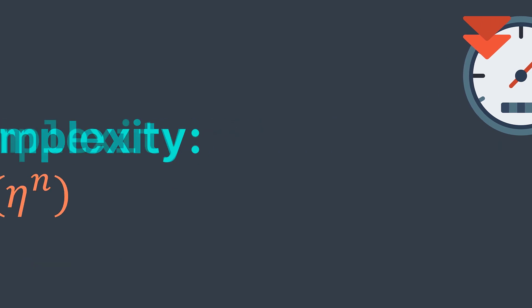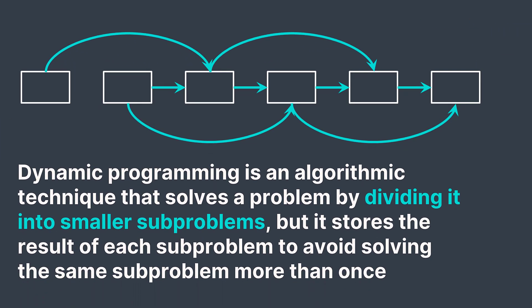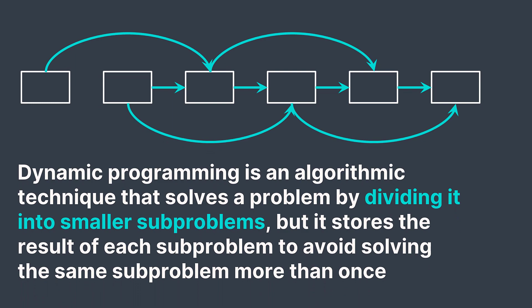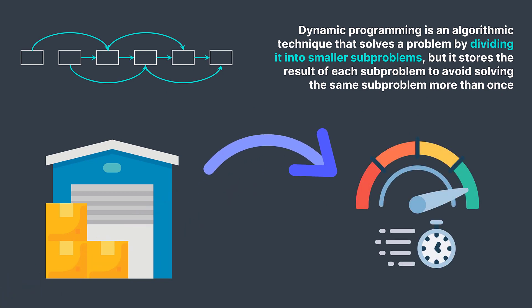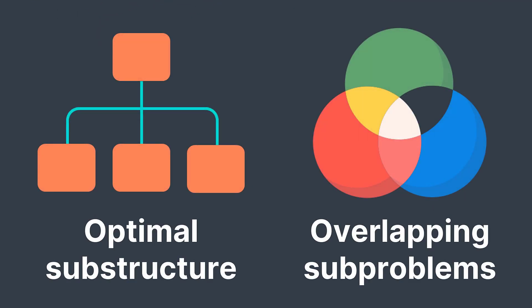Dynamic programming is an algorithmic technique that solves a problem by dividing it into smaller subproblems, but stores the result of each subproblem to avoid solving the same subproblem more than once. So even though we may need some extra space, we get huge improvements in terms of time. To benefit from dynamic programming on a particular problem, it needs to have two important properties: optimal substructure and overlapping subproblems.